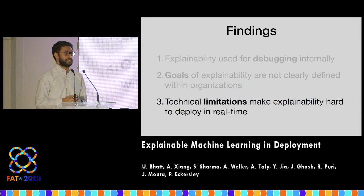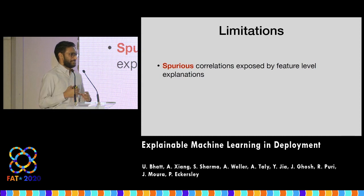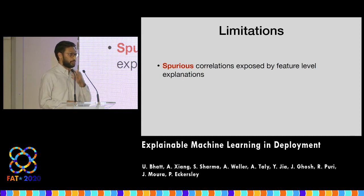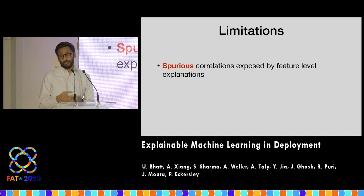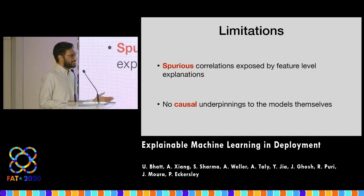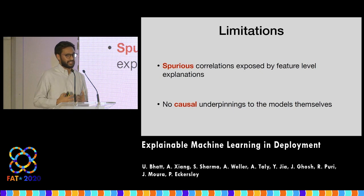There are also technical limitations with current algorithms. Many techniques detect spurious correlations in training data — for example, one organization built a smile detection algorithm and noticed that not only was the mouth important, but high cheekbones were flagged as important too. Their engineers didn't know how to fix this other than collecting more data to nullify the confounder. This points to a broader problem: there are no causal underpinnings to the models themselves, yet we're trying to develop causal attribution techniques. We ought to be thinking about developing causal models themselves.